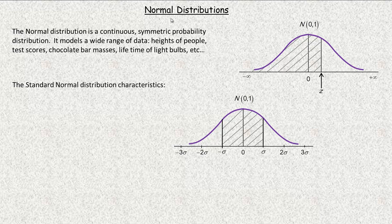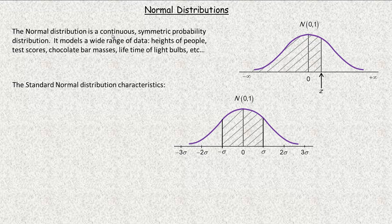In this tutorial we're going to take a look at the normal probability distribution, and specifically how you use the standard normal to solve some probability problems. Normal distributions are continuous, meaning the random variable can have any value whatsoever. It's not discrete like tossing a coin where you can get 3 or 4 heads but not 3.6 heads. So normal distributions are used for something that's measurable.